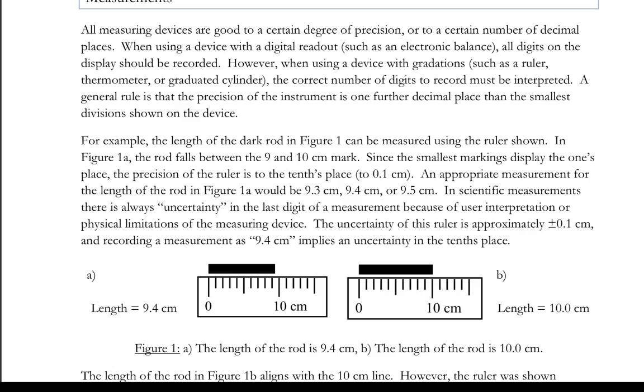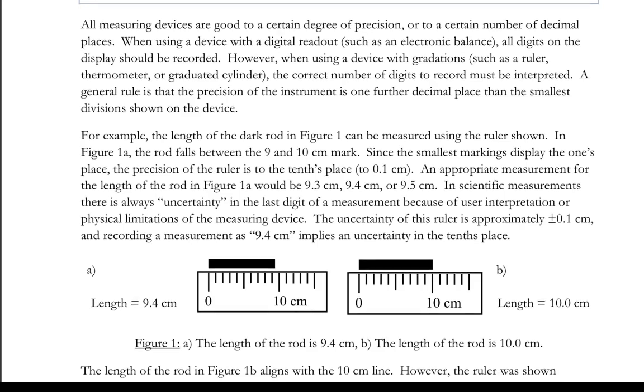Maybe somebody else would say it's 9.3 centimeters, a third person maybe 9.5 centimeters, and all of that is okay. If the bar is as in B and it's basically at the 10 centimeters line, we wouldn't call that just 10 centimeters because the precision of that ruler allows us to report one decimal. So we would say it looks like it's right on the 10 line, so we would call that 10.0 centimeters.